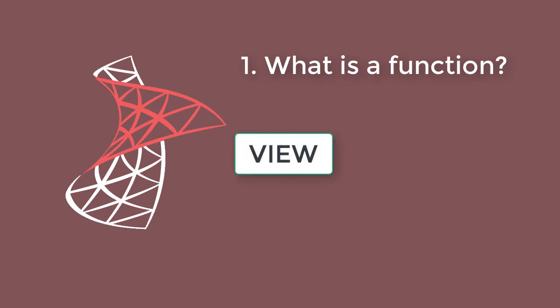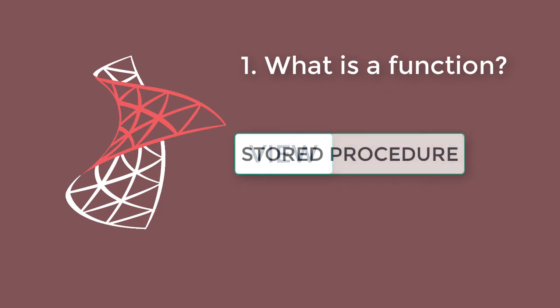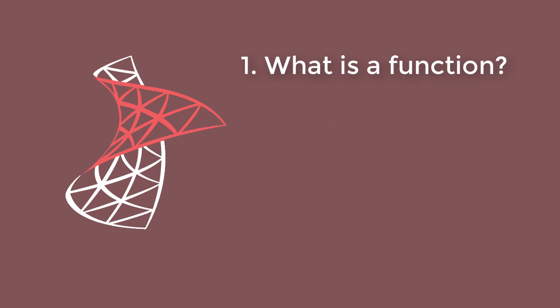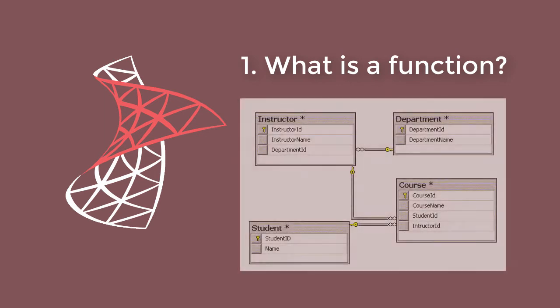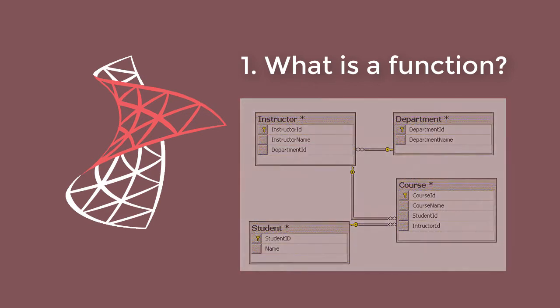It is like a view, but a view does not accept parameters. It also looks like a stored procedure, but a stored procedure cannot be used in a relationship. So, in summary, a function acts like a stored procedure but can also be used as a table in a relationship.